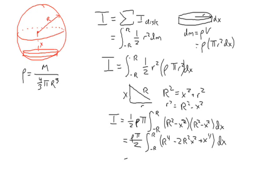You have rho pi over 2 times r to the fourth x minus 2 thirds r squared x cubed plus x to the fifth over 5, multiplying two minuses to get a plus, evaluated from negative r to r.